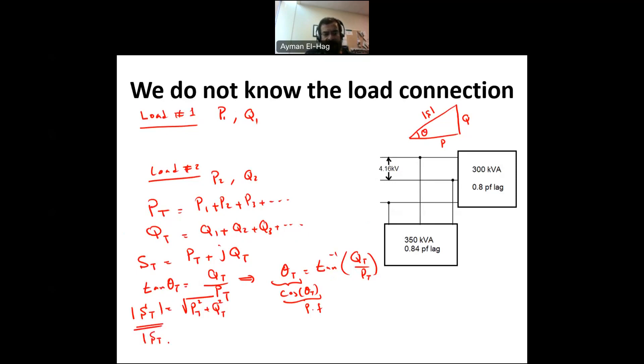Once I know S total, so my S total is equal to root 3 V line, which is usually given in the question, times I line. So from this, I can find my I line, which is equal to S total divided by root 3 V line.